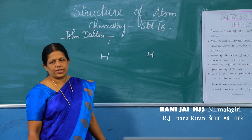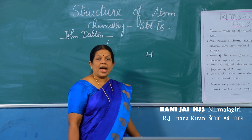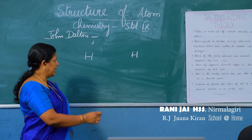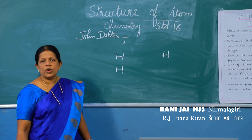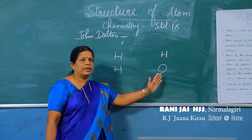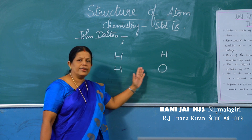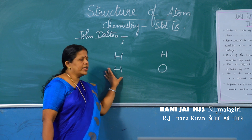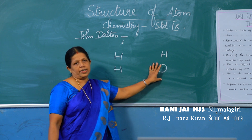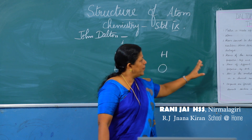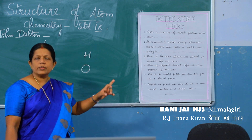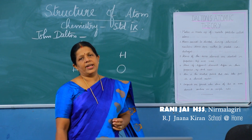The fourth postulate: atoms of different elements have different chemical properties, size, and mass. For example, a hydrogen atom and an oxygen atom are different. Hydrogen has a particular property and oxygen has some other particular property. The fifth postulate: atom is the smallest particle that can take part in a chemical reaction.